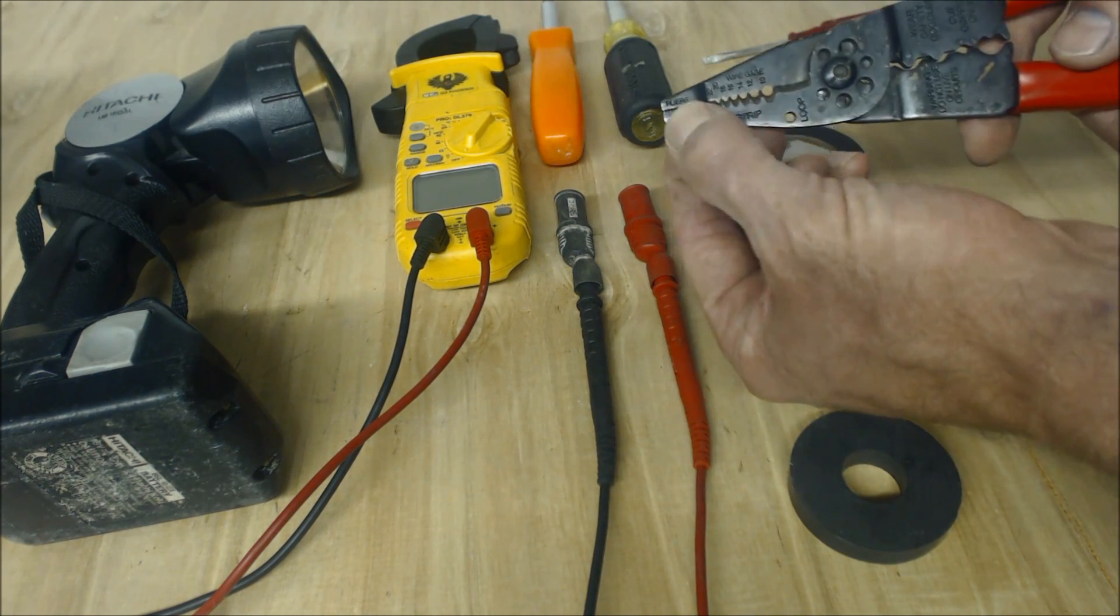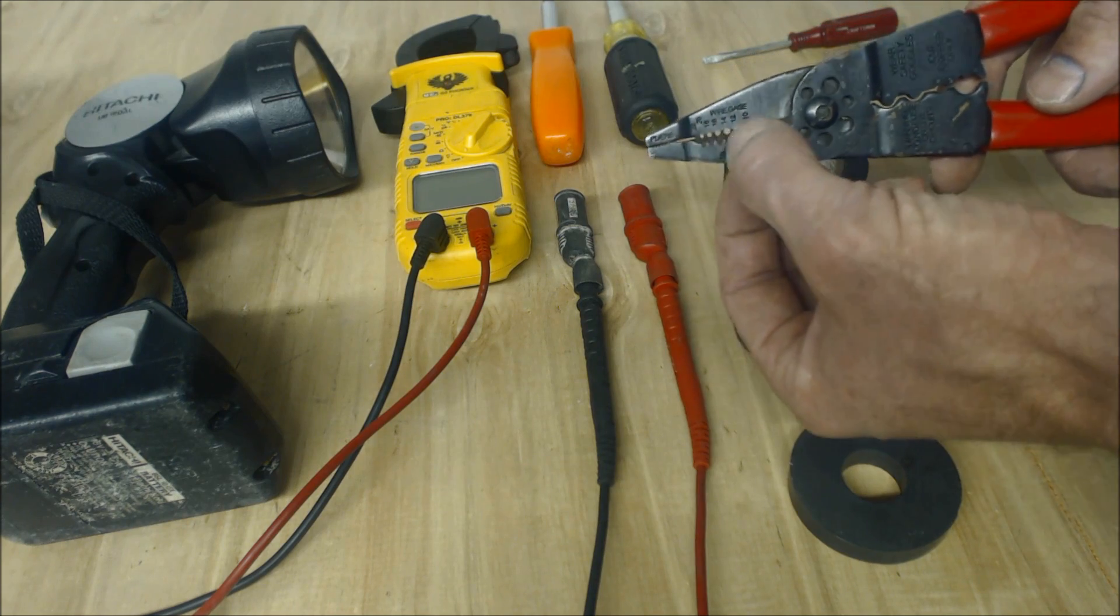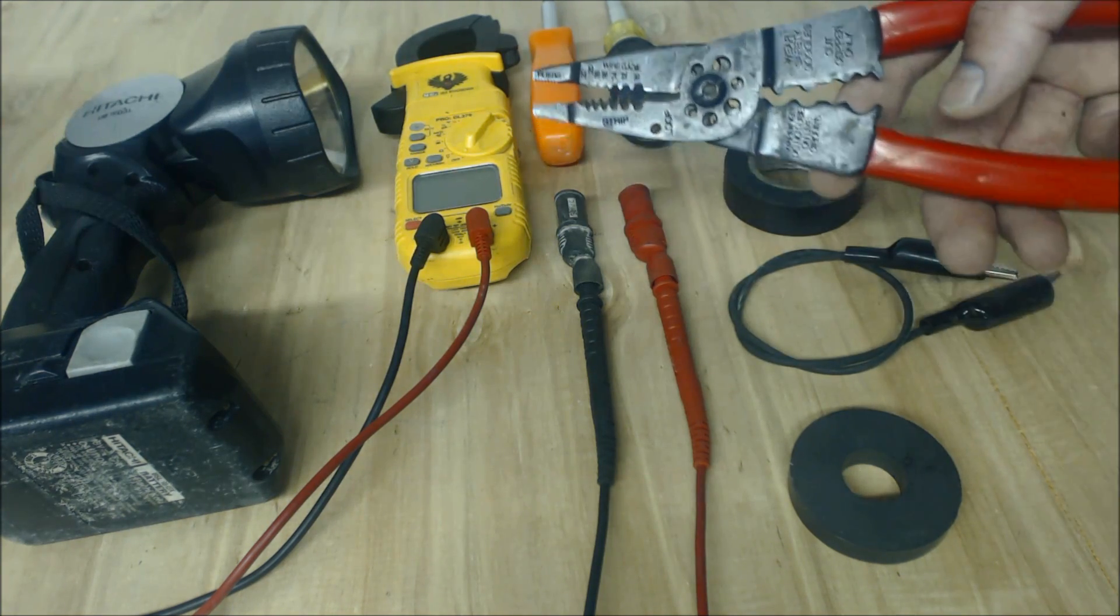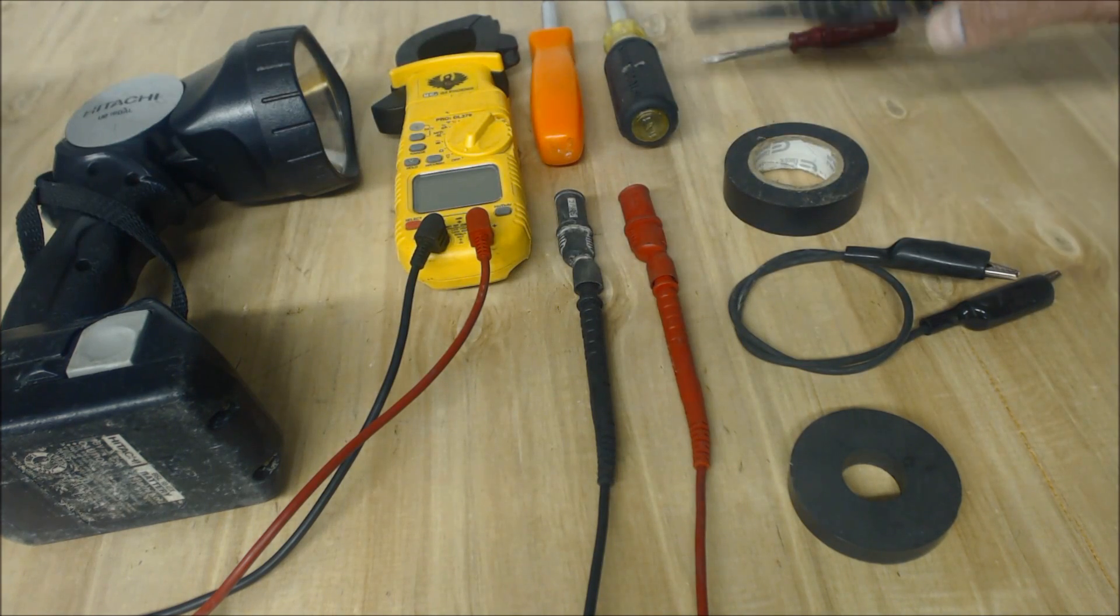There's pliers on the end of these wire strippers and cutters. You have the wire stripping function, the wire cutting, and then the crimping area right here for your spade terminals. Use these constantly.